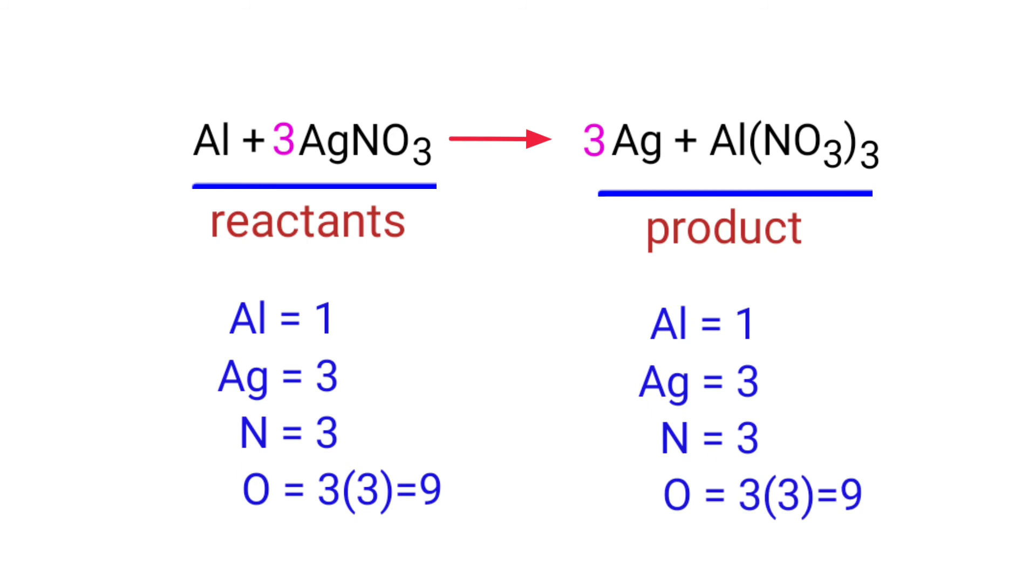The equation is now balanced. There are one aluminum atom, three silver atoms, three nitrogen atoms, and nine oxygen atoms on both sides.